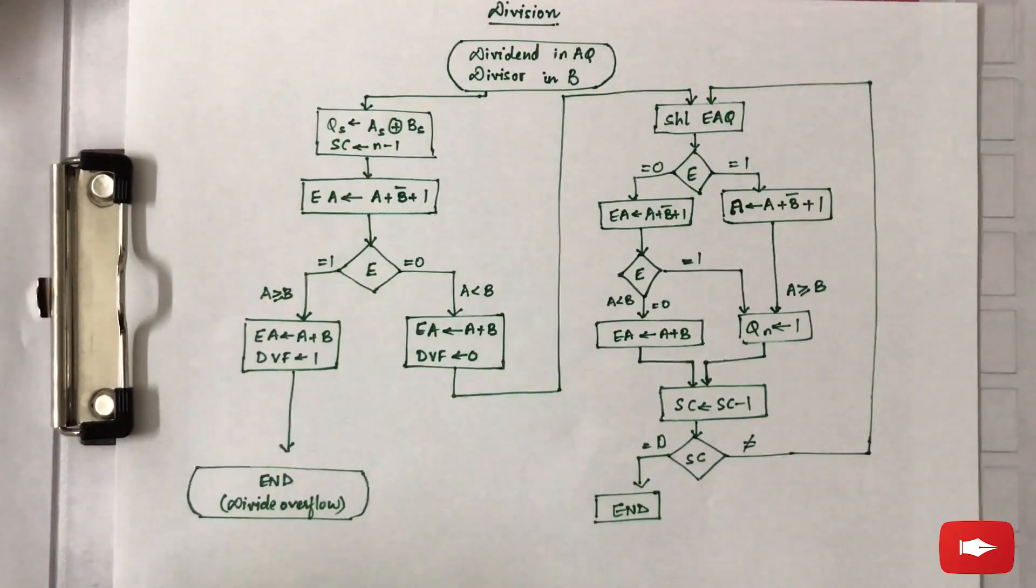But when we are implementing this operation using hardware, there can be a problem. The division operation may result in a quotient with an overflow. This is because the length of the registers that we are using are of finite length and will not hold a number that exceeds their length.